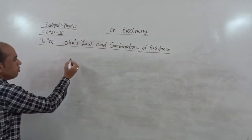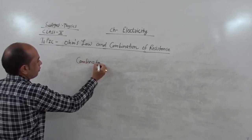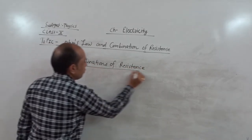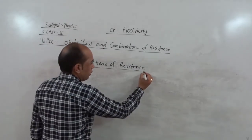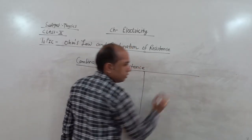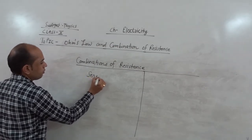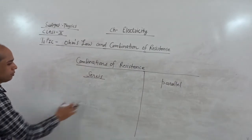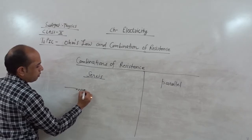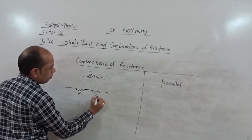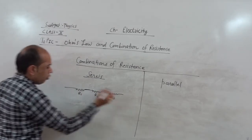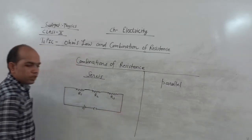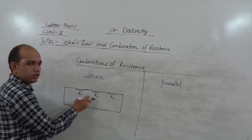Next we come to combination of resistance — how to combine resistances in an electric circuit. We have two ways to connect resistances: number one is series, and number two is parallel. In series, the resistances are connected one by one, meaning R1 is connected to R2, then R3, and so on. All the resistances are then connected to a battery and one key. Such an arrangement is called a series arrangement, when two or more resistances are connected one by one.